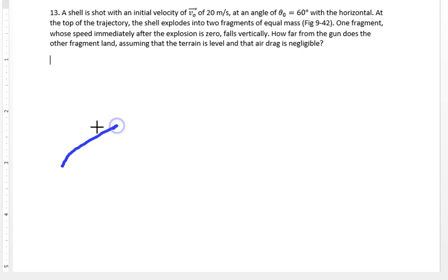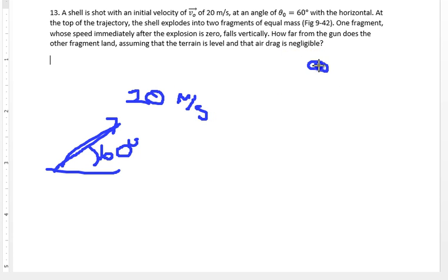So this gets shot at 60 degrees, 20 meters per second. And at some point up here, it goes boom. A piece of it, its velocity becomes zero. Its velocity at the top of the trajectory becomes zero, and then the remaining mass goes on from there. So, how far from the gun does the other fragment land, assuming that the terrain is level and air drag is negligible?